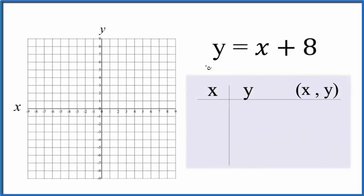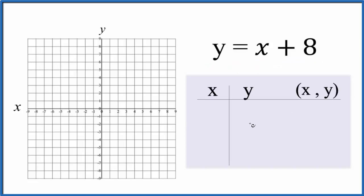Let's graph the equation y equals x plus 8, and we'll do it two ways. First, we'll use a table of values. We'll put values in for x, find out what y is, and then we'll graph those points on graph paper. After that, we'll check our work with the slope-intercept formula to see if we have the right answer.